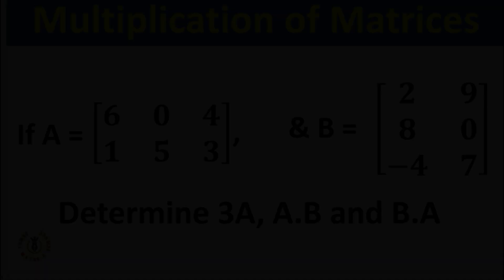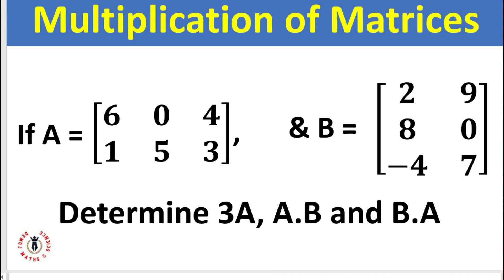For this example, we have two matrices — A and B. We have to determine 3A, A·B, and B·A. I chose this example to help us see how it works with scalar multiplication and matrix multiplication, as we explained in our last lesson.